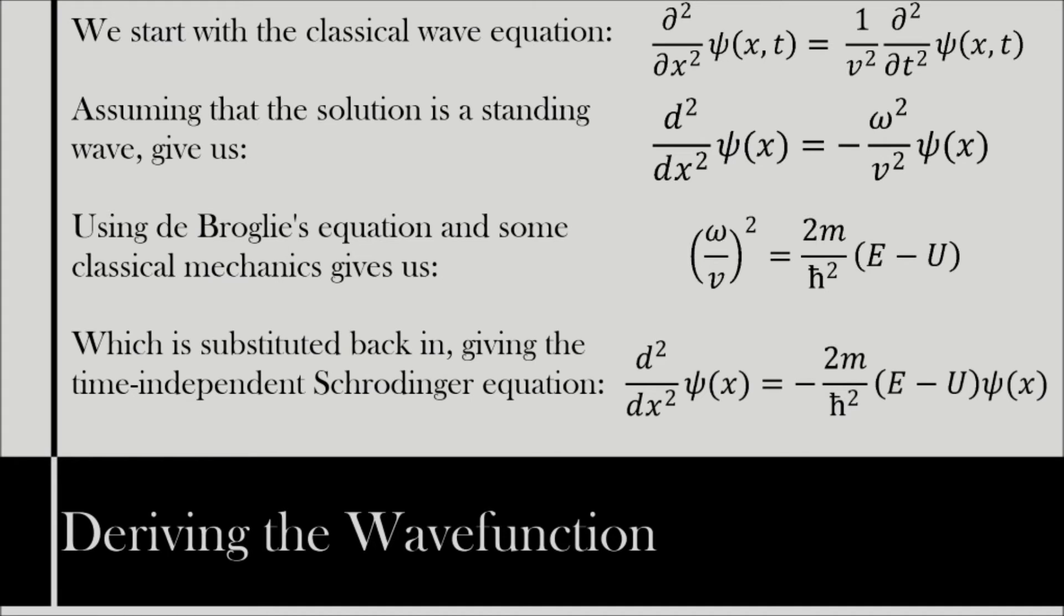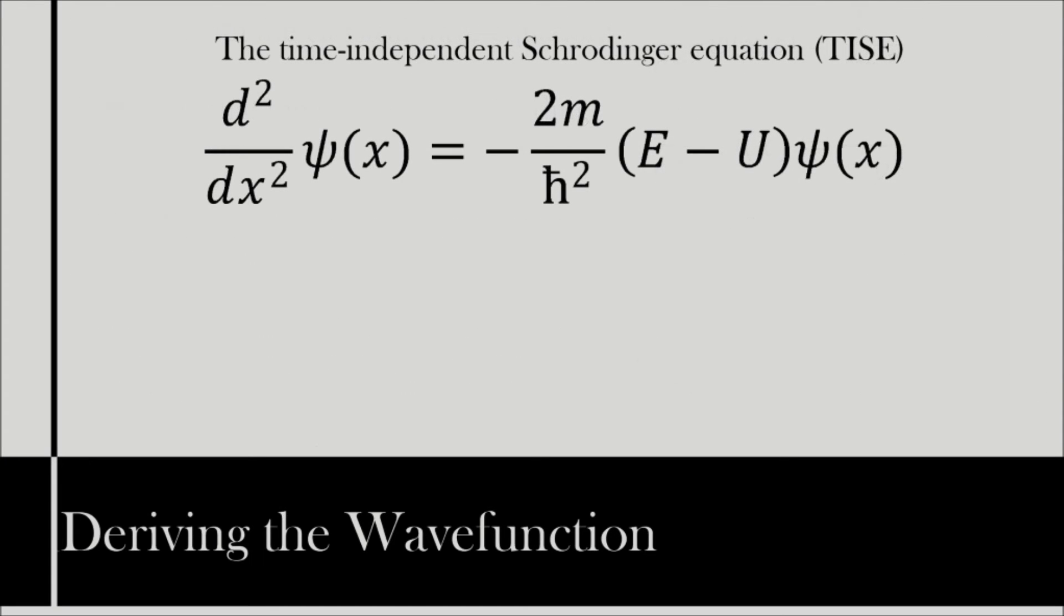which is second order differential with respect to x of ψ(x) equals minus 2m over ℏ² times, open brackets, E minus U, closed brackets, times ψ(x).